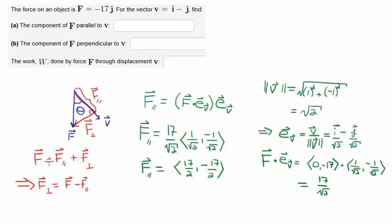So F, broken into its components, there's a parallel component and a perpendicular component. So to solve for the perpendicular component, I just subtract F parallel from both sides, and I get that F perpendicular is equal to F minus F parallel.